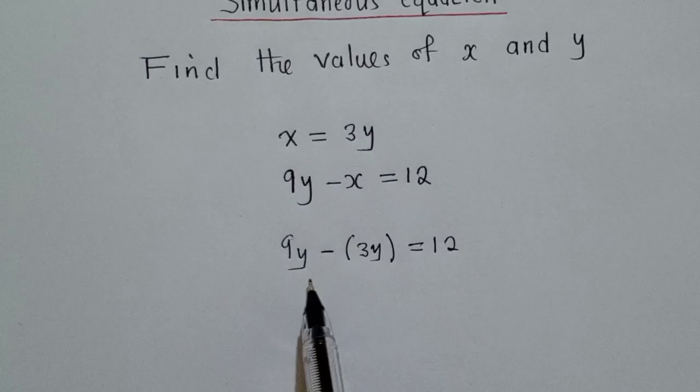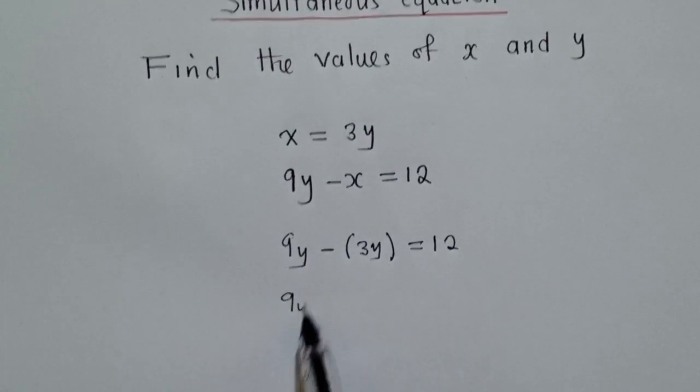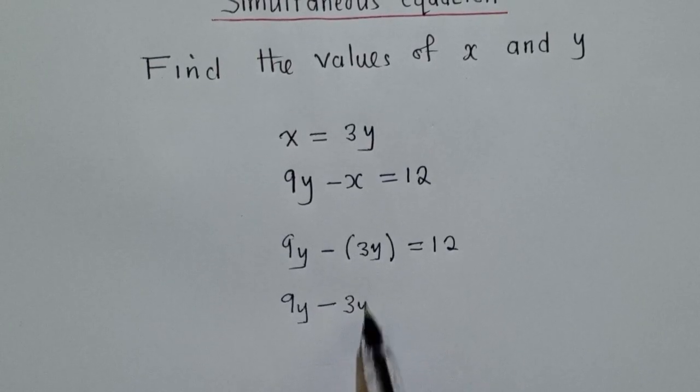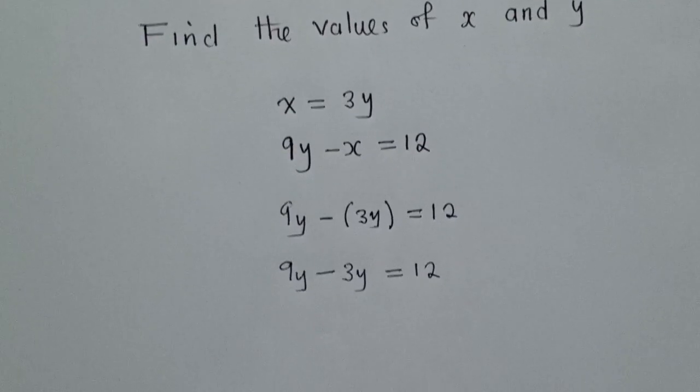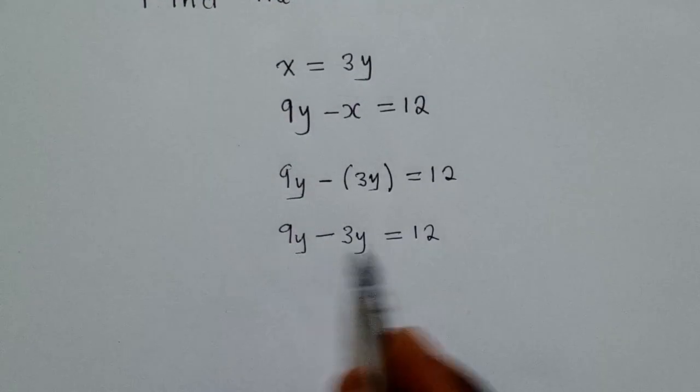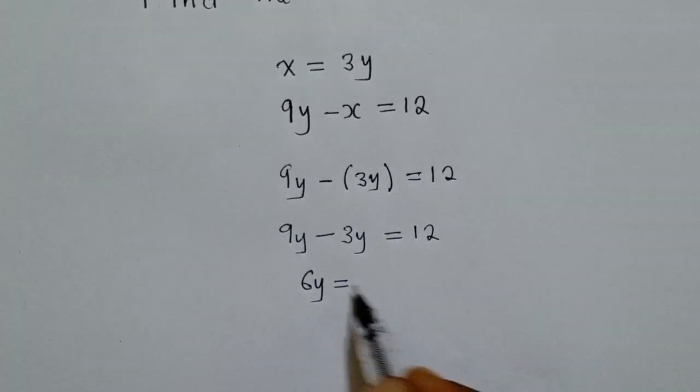So if you can see, we've got the variables Y here and Y here. So we can now say 9Y minus 3Y is equal to 12. So after having things like this, we now work out what is here and we're getting 6Y is equal to 12.